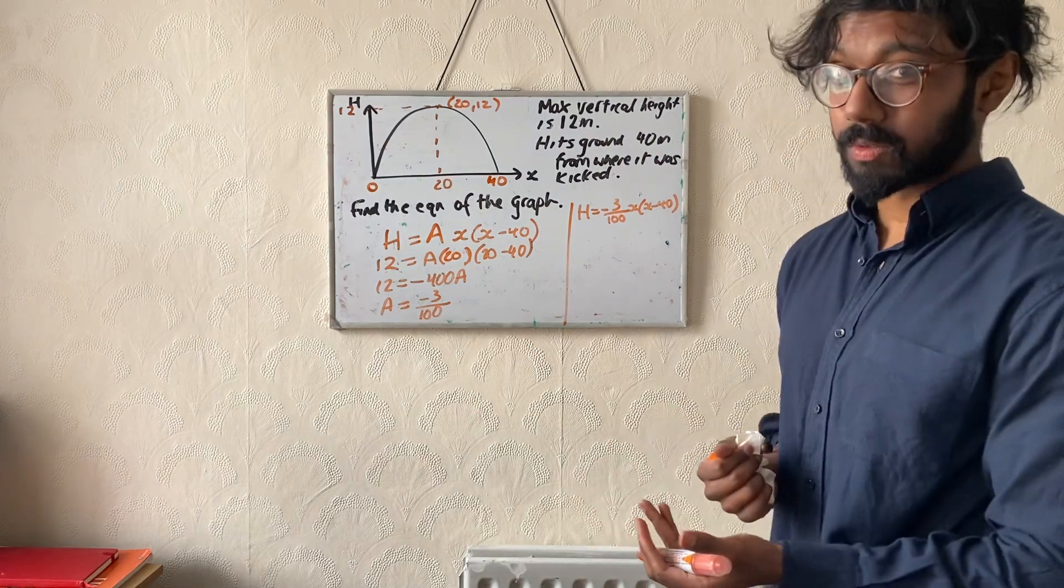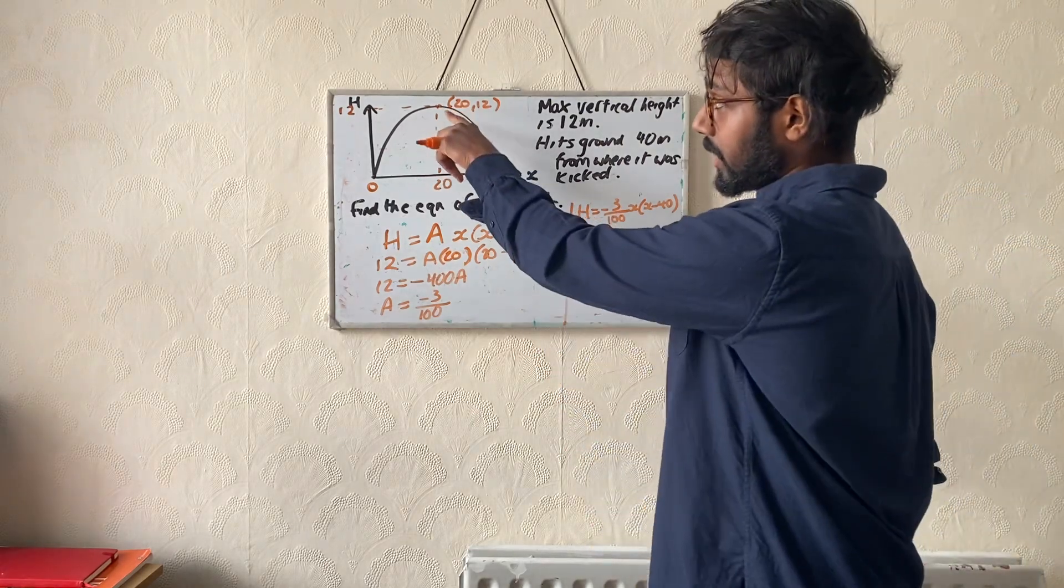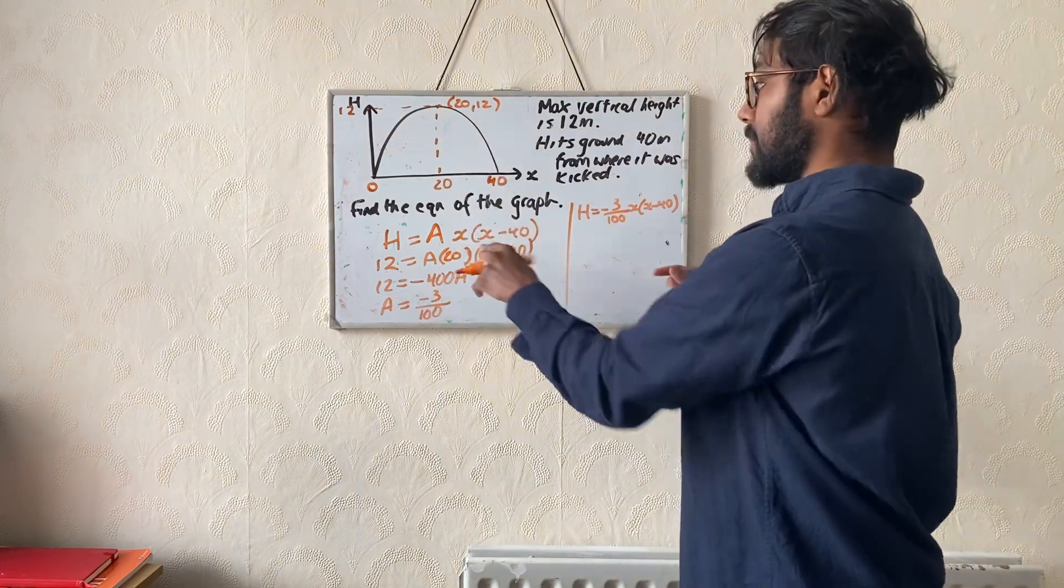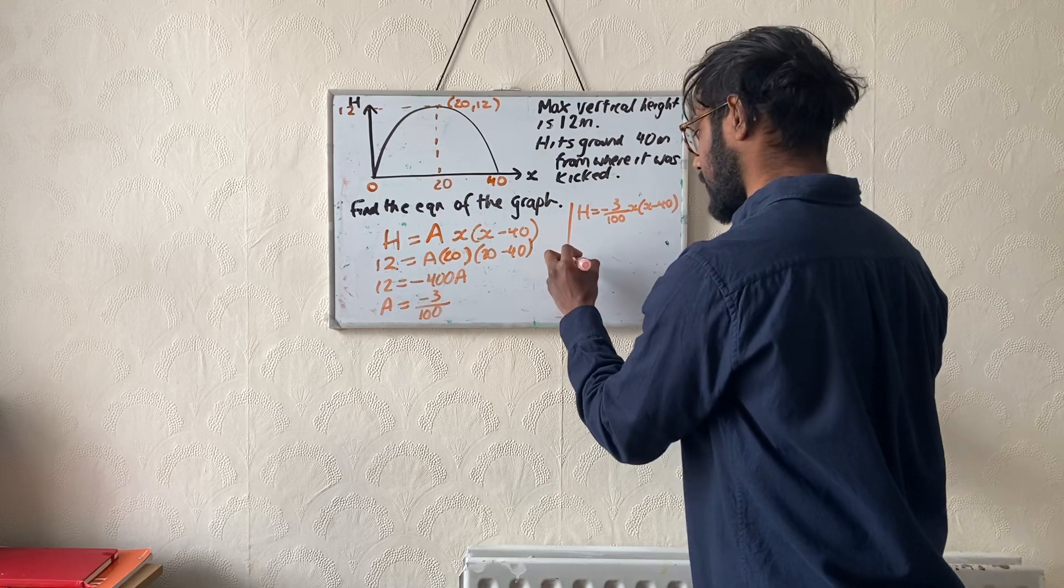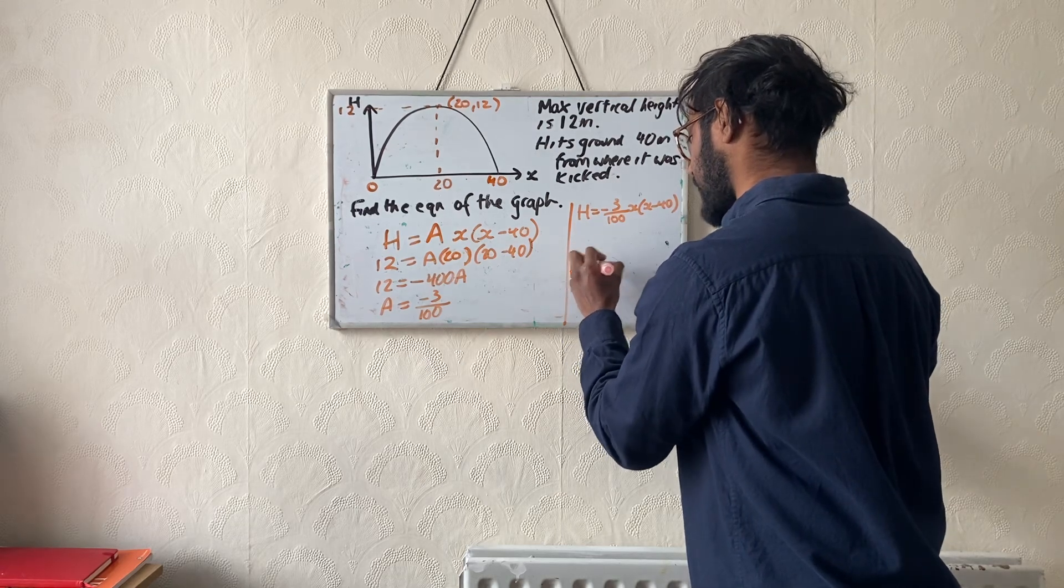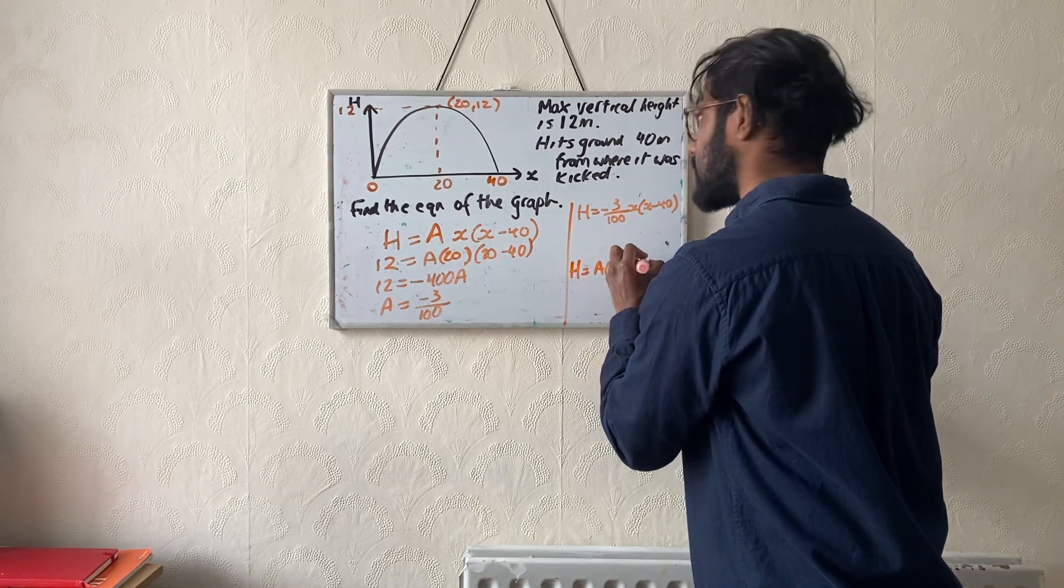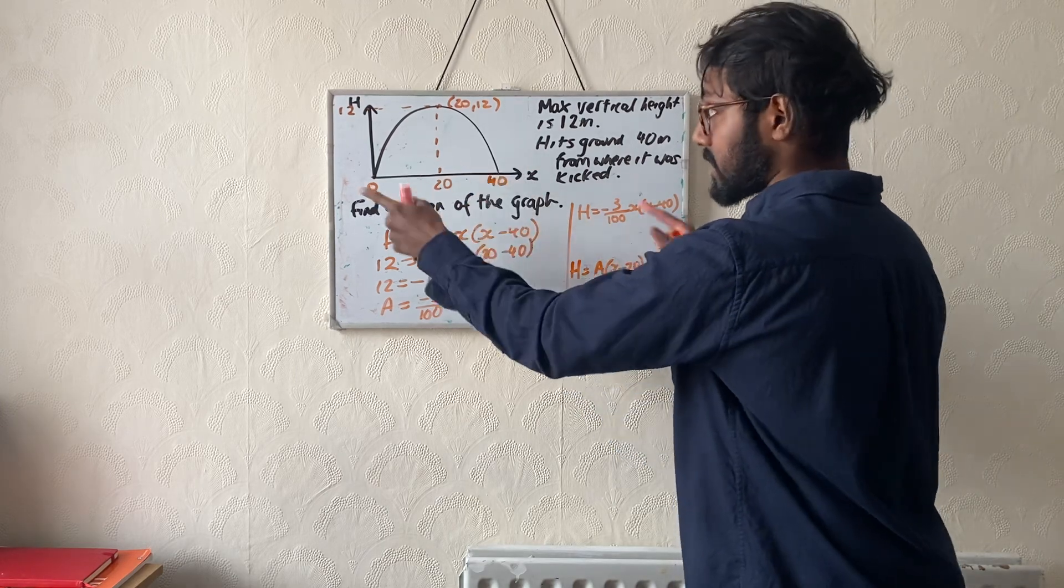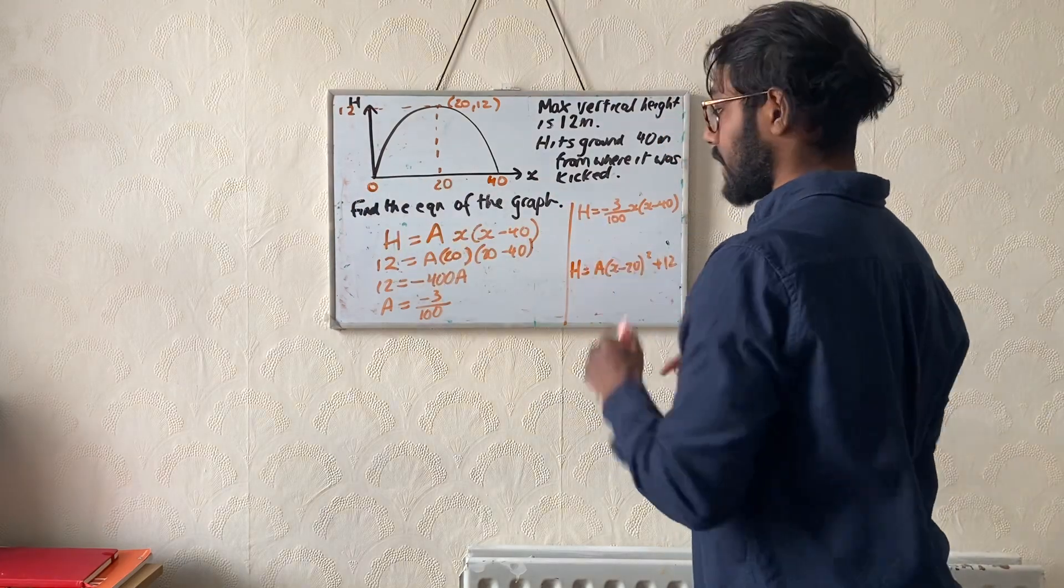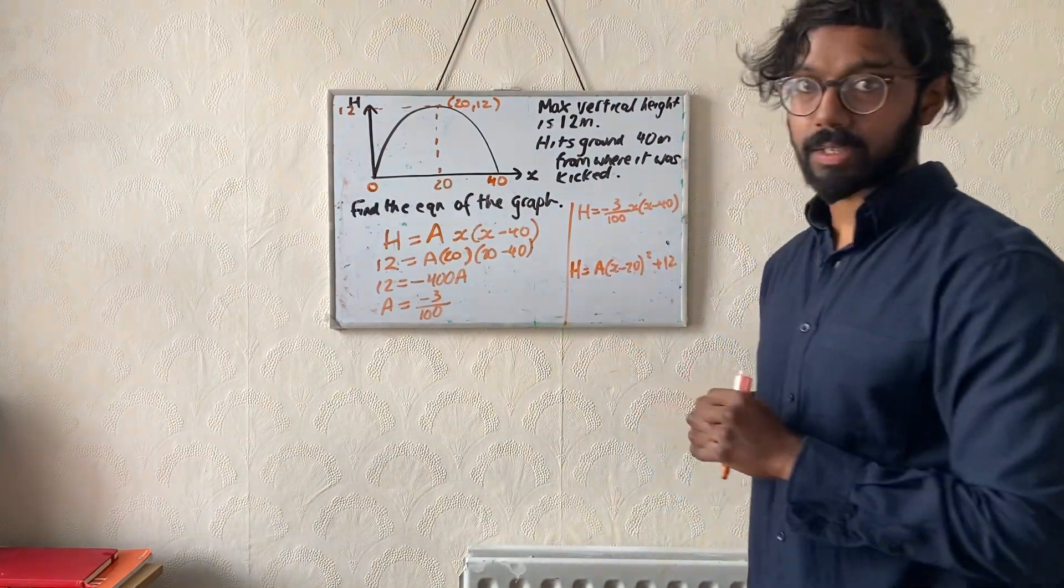There was also another way I could do this question. I could use the turning point form. I'm not going to do the entire way, but I could do h equals a brackets x minus 20 squared plus 12, and I can substitute in the coordinates I haven't used, which are 40, 0, to work out capital A as well. But you can try that yourself.